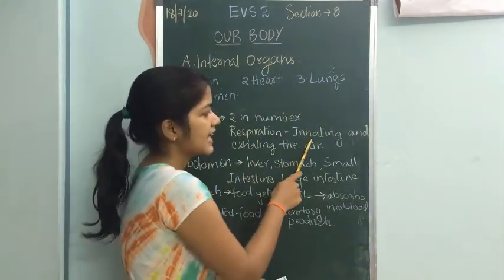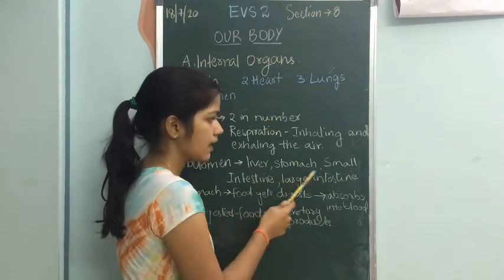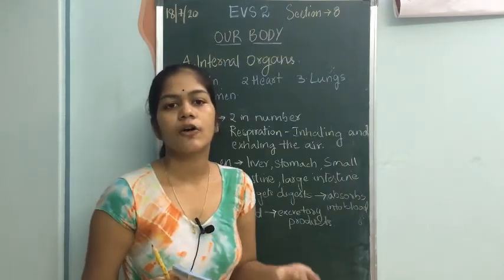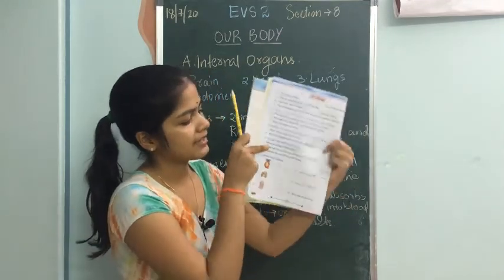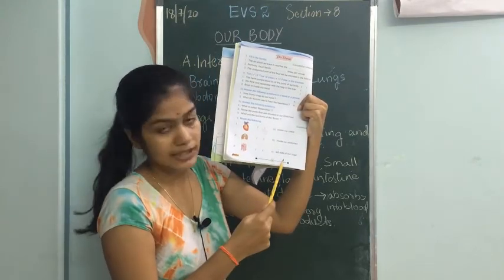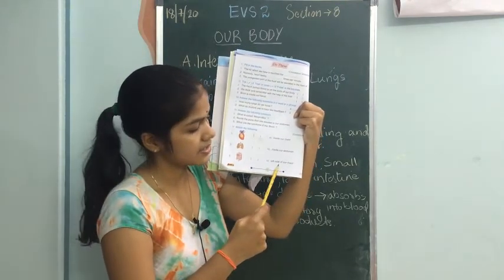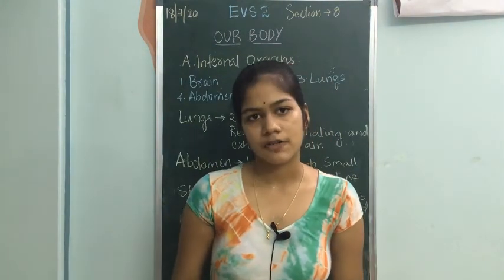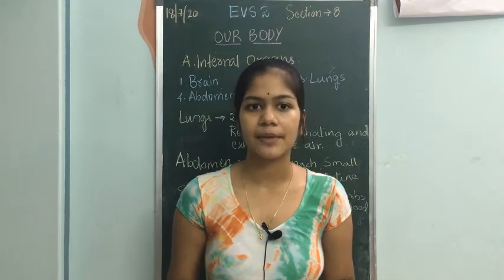What is respiration? Inhaling and exhaling the air is called respiration. What are the parts situated in the abdomen? Liver, stomach, small intestine, and large intestine. What are the functions of the brain? The brain orders all other parts to function properly and helps in thinking, understanding, and remembering. Match the following: heart is on the left side of the chest, lungs are inside the chest, and the liver, stomach, small intestine, and large intestine are inside the abdomen. That concludes today's class on internal organs.